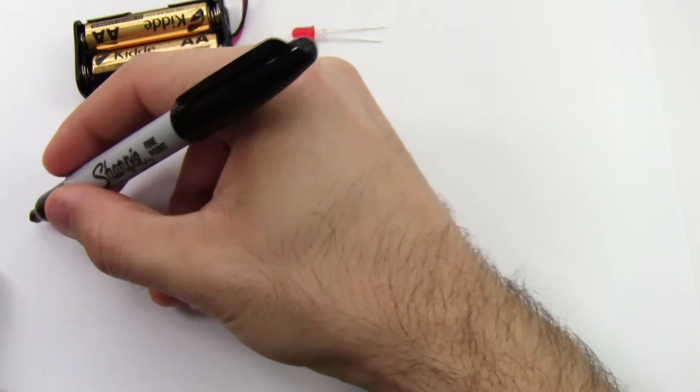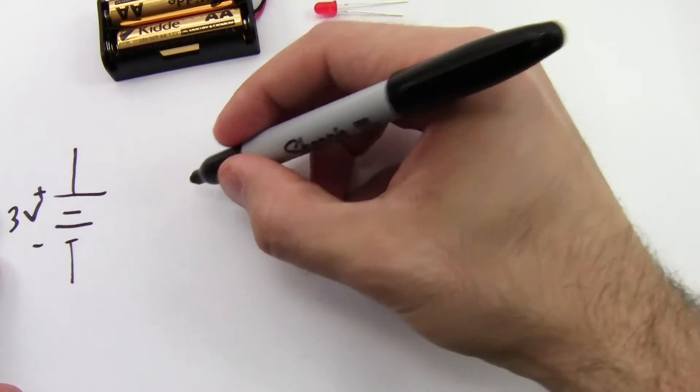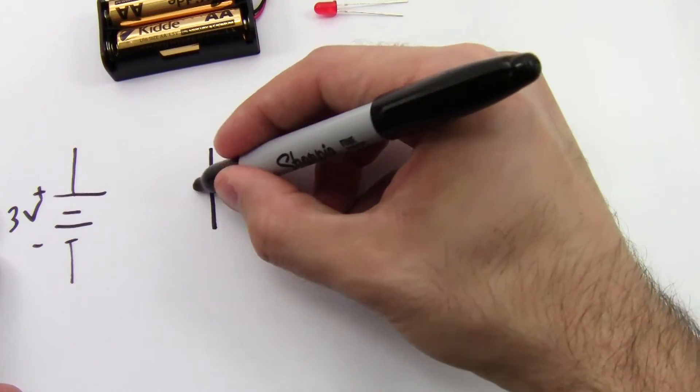So now it's time to do some math. I have my 2 by AA battery pack which provides 3 volts. I have my LED which has a forward voltage drop of only 2 volts.